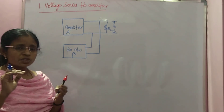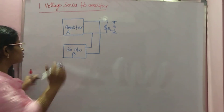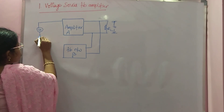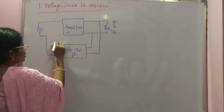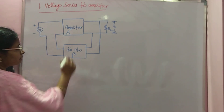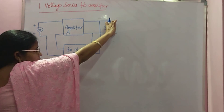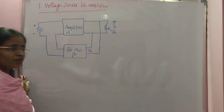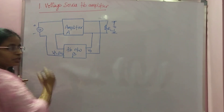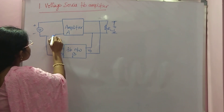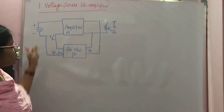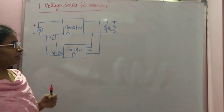For series mixing, the input must be a voltage source, so the feedback must mix in series with the input voltage source. This is Vs, and this is the feedback network. As it is voltage sampling, the output is voltage, so the feedback network takes V0 as input and gives Vf equal to beta times V0. This Vf mixes with Vs in series, and as the feedback is negative, a minus sign is indicated.